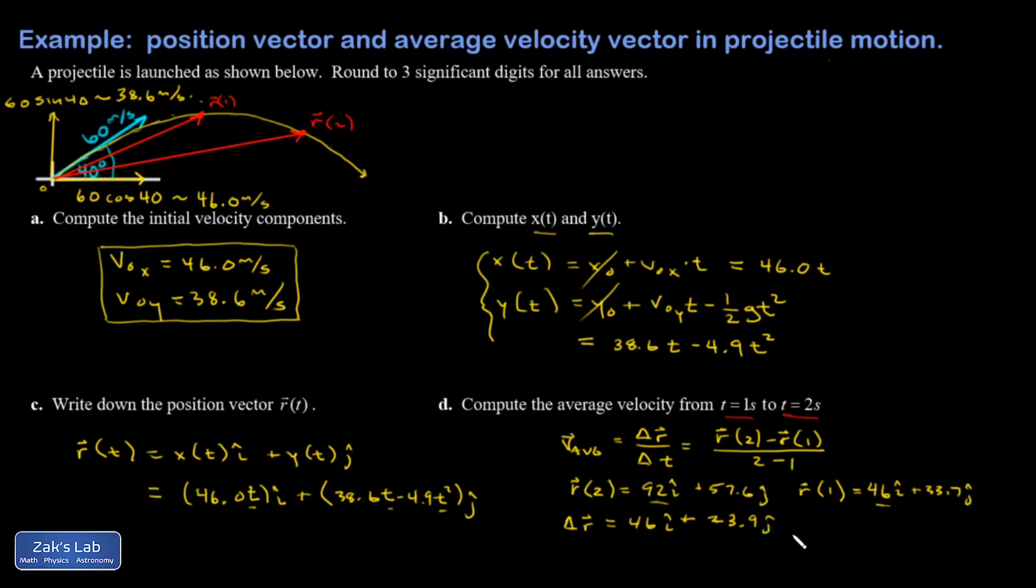Okay, then I take delta r and divide by delta t, which is just one second. The coefficients up here have units of meters and down here seconds, so I'm going to put them in at the very end. So down here I have 46 meters per second i hat plus 23.9 meters per second j hat.